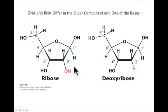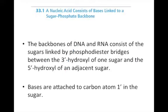The ribose and deoxyribose sugars are linked together to make the long strands of nucleic acids. The 3' hydroxyl of one sugar is linked to the 5' hydroxyl of an adjacent sugar through a phosphodiester bridge. These phosphate groups link the sugars together. Also included in the DNA are the nitrogenous bases, which are linked to the sugars on the 1' carbon.